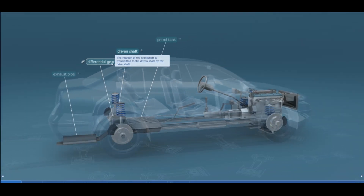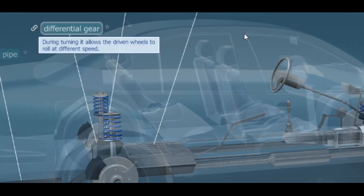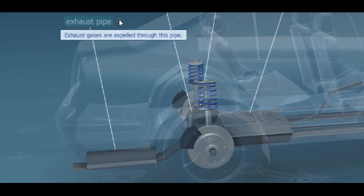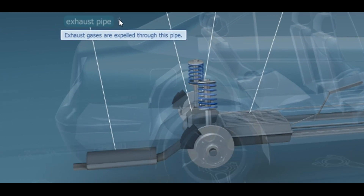The differential gear allows the driven wheels to roll at different speeds during turning. Finally, we have the exhaust pipe, which is where all of the exhaust gases are expelled through the back of the car.